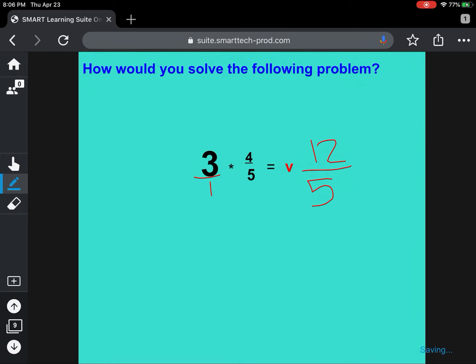And since that is an improper fraction, you turn it into a mixed number. So you ask yourself, how many 5s can you get out of 12? Or how many times does 5 go into 12? And that would be 2 times, because 2 5s is 10. And then that means you would have 2 left over, with 5 as your denominator. So 3 times 4/5 is 2 and 2/5.